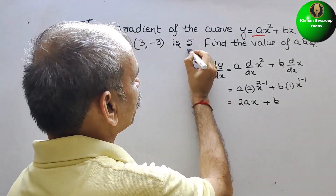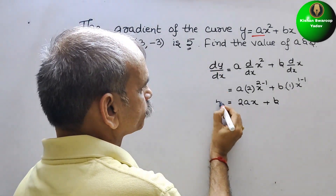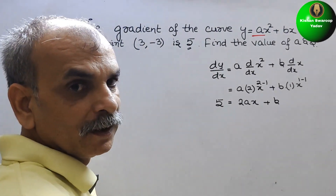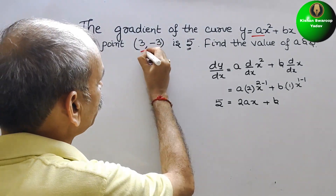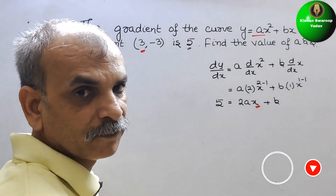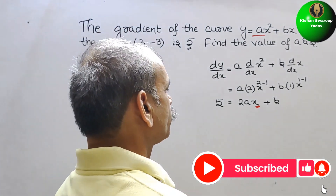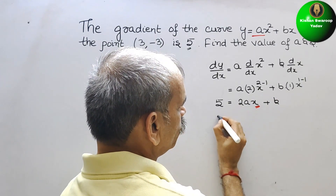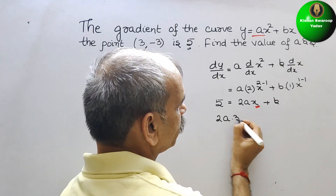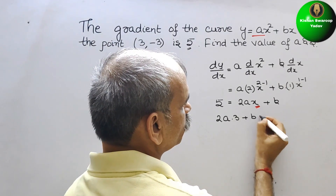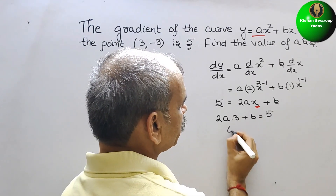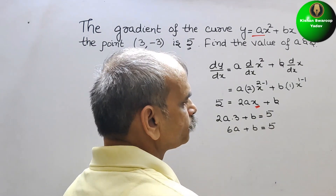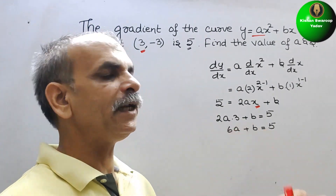This value dy/dx equals 5, and at the point (3, -3), we substitute x = 3. So we get 2 times a times 3 plus b equals 5, which gives us the first linear equation: 6a + b = 5.